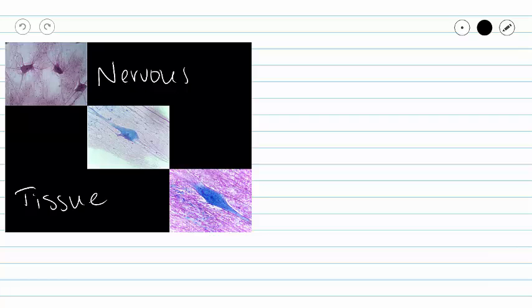This recording is going to conclude our entire series of lectures on tissues found in our body with our nervous tissue. Now remember, nervous tissue is also an excitable tissue, which means you can stimulate our nerve cells and get a response.